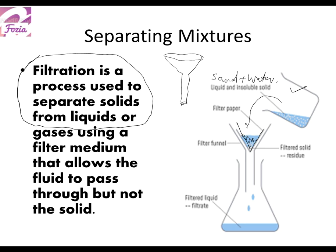As we run this mixture of sand and water through it, the liquid drops will come down, blocking the sand on the filter paper. The liquid which passes through is called the filtrate, and the solid which is collected on the paper is called the residue. This is how filtration is used to separate solid from liquid.